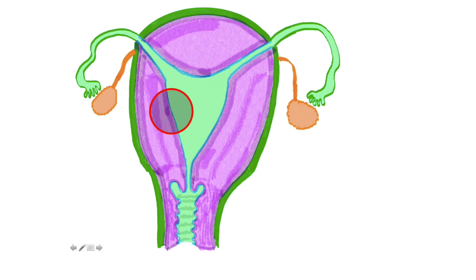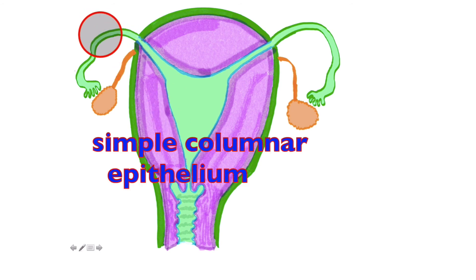The endometrium is composed of simple columnar epithelial tissue, just like the fallopian tubes. The big difference is the epithelial tissue of the fallopian tubes have cilia to help propel the egg down into the uterus, whereas the simple columnar epithelial tissue of the endometrium have no cilia.